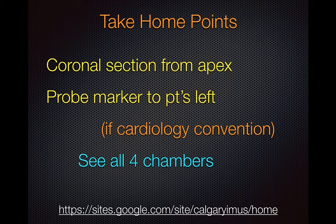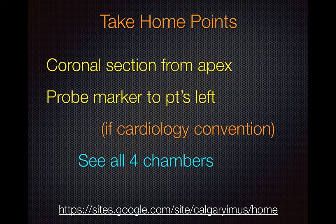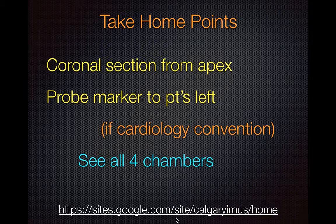So to summarize: in the apical four-chamber view you're obtaining a coronal section at the point of the apex. Point the probe marker to the patient's left if operating under the cardiology convention. You should try to see all four chambers with the septum more or less in the middle, and both the mitral and tricuspid valves. Thanks for tuning in — a number of our tutorials can be found on our homepage.